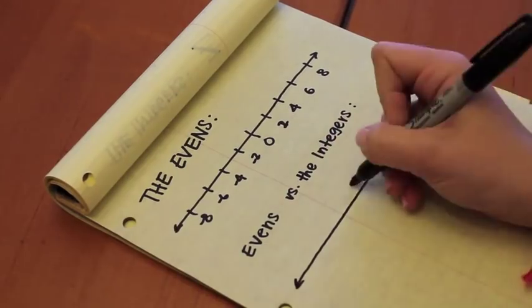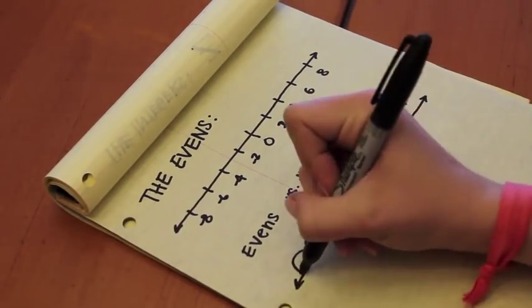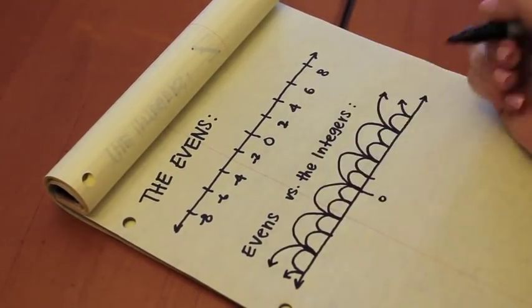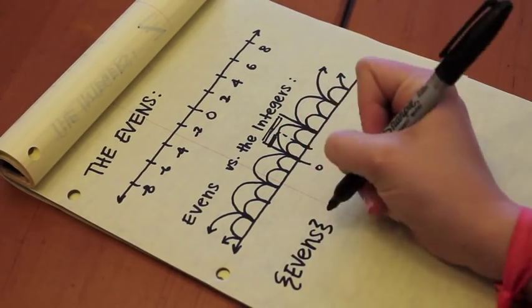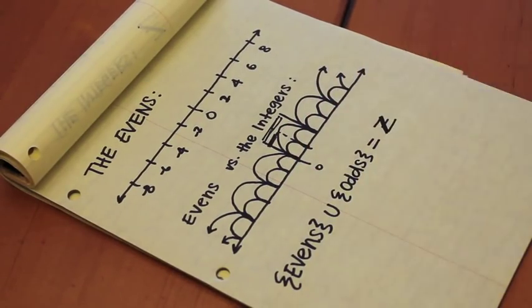But hold on a second. Both of these sets, the integers and the evens, are infinite sets, we just agreed. But, do we really think that there are just as many integers as there are even numbers? Won't there always be two whole numbers for every even number? Wouldn't the set of evens plus or union the set of odds equal the set of integers? Yep, it would. That's a true relationship.